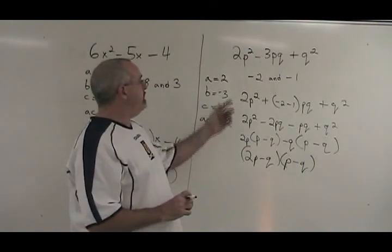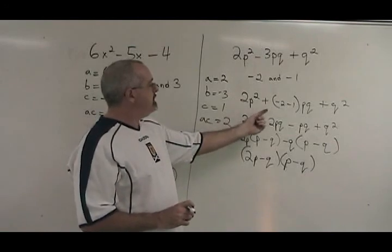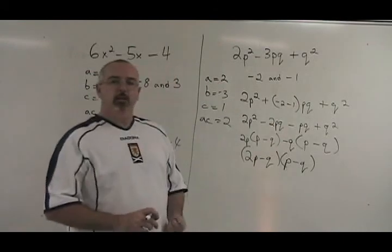So the complex trinomial method is very similar to the simple trinomial method. But you have to do these extra steps. The AC, the forced positive sign, the bracket, and the grouping the rest of the way. But it works, and it always works.